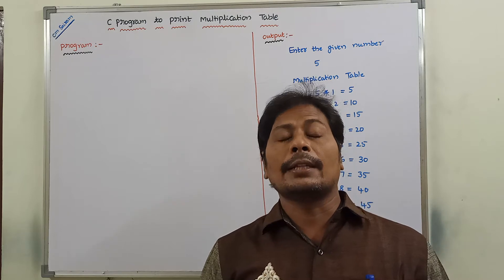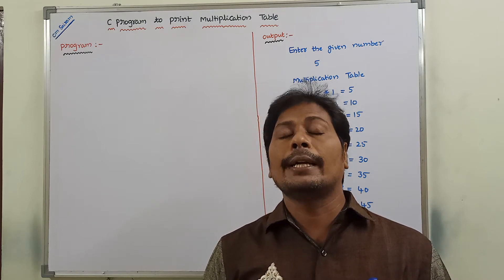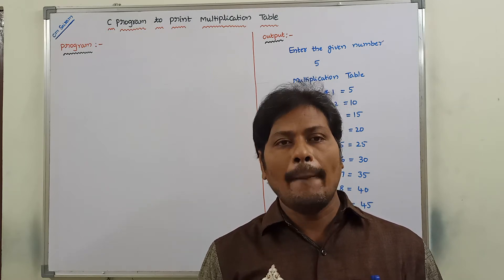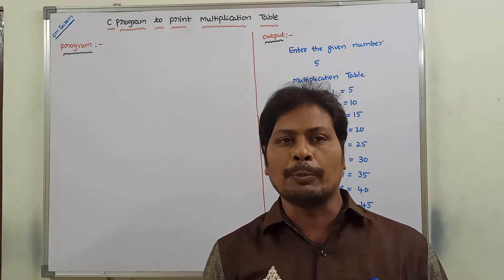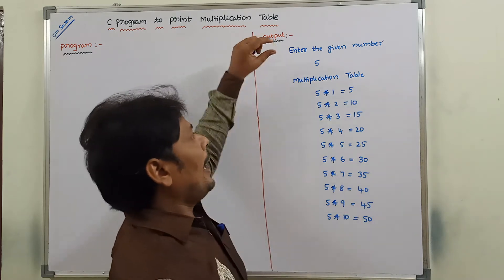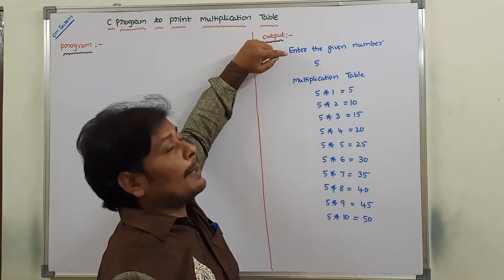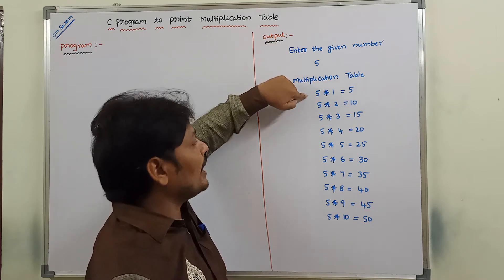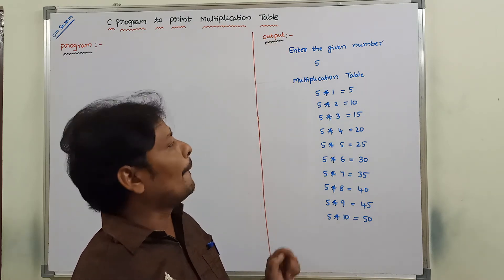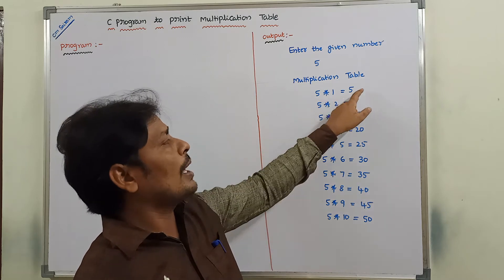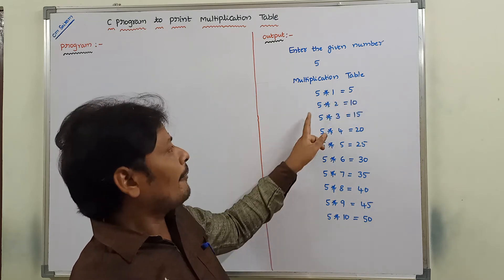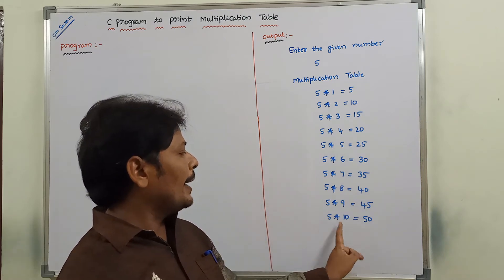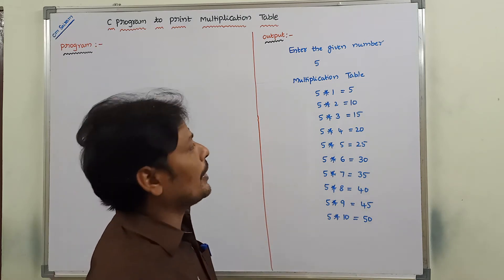Whatever number is read from the keyboard, its multiplication table can be displayed on the monitor as output. Suppose I am taking the number 5 from the keyboard, so its multiplication table is displayed on the monitor: 5 into 1 is equal to 5, 5 into 2 is equal to 10, up to 5 into 10 is equal to 50.